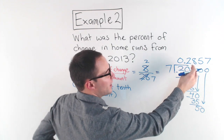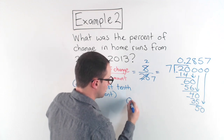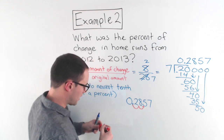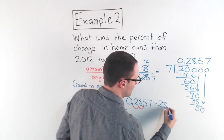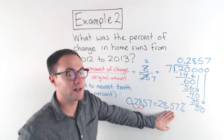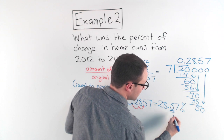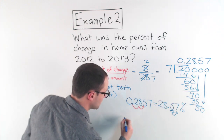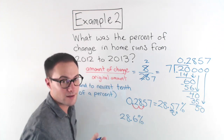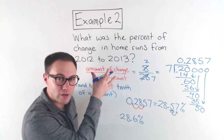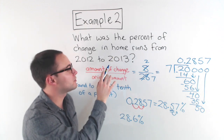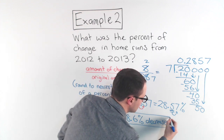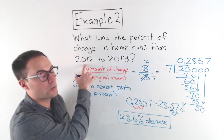So 0.2857 as a percent: move the decimal point twice to the right, which gives me 28.57%. We want to round to the nearest tenth of a percent — the digit in the hundredths place is seven, which is greater than five, so that rounds up to 28.6%. And the last step: is this an increase or decrease? 2012 was 28 home runs and 2013 was 20, so it decreased. Final answer: 28.6% decrease in home runs from 2012 to 2013.